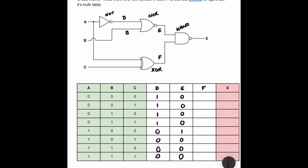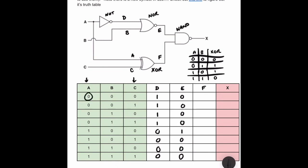Looking at F, it takes inputs from A and C into an exclusive OR gate. An exclusive OR only produces a one if a single input is a one: zero-zero gives zero, zero-one gives one, one-zero gives one, and one-one gives zero. So unlike a regular OR gate where one-and-one produces a one, in an exclusive OR gate it produces a zero. Looking at columns A and C, a zero and zero produces a zero, and we work through the remaining combinations.